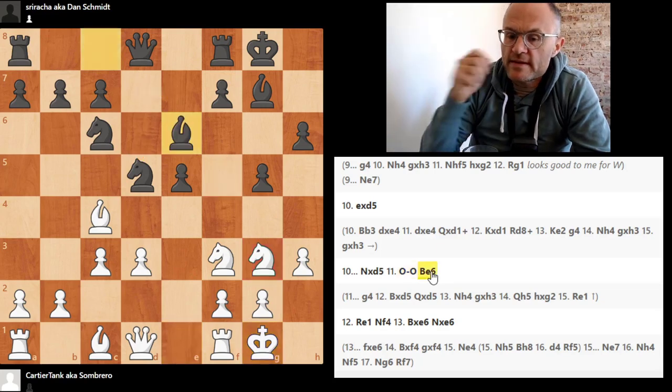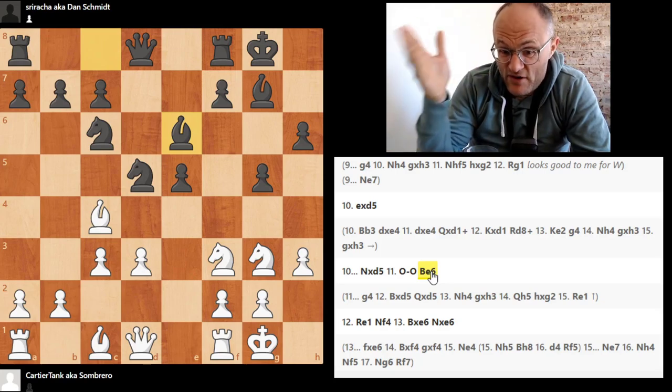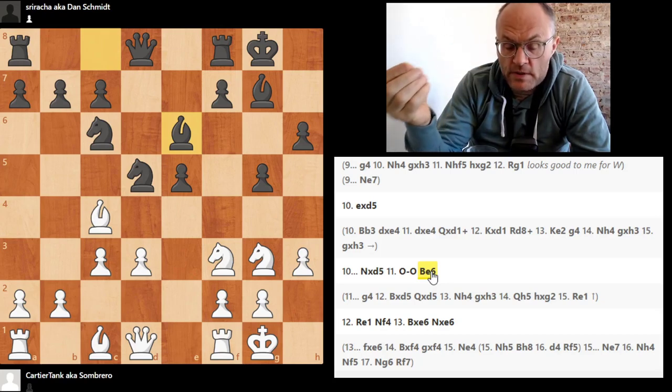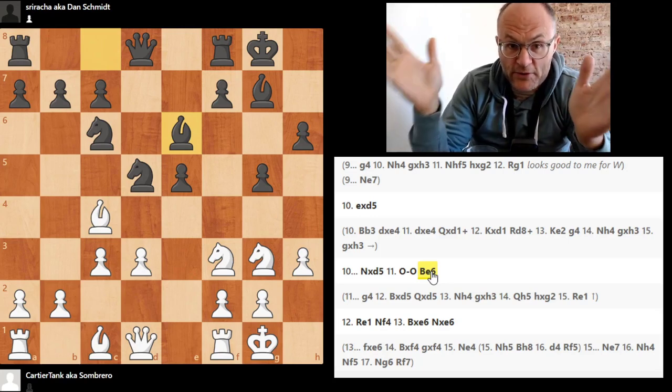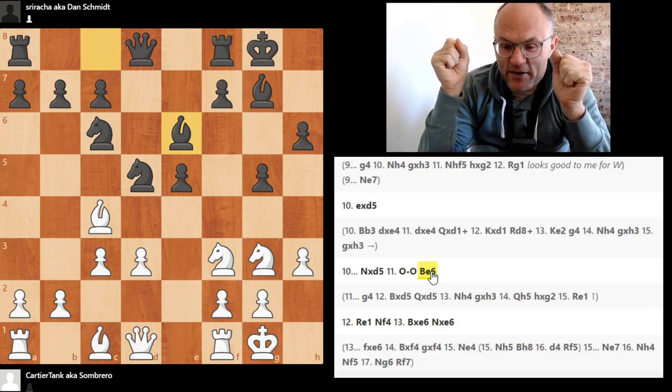Instead, we see bishop e6. And you see this in a lot of Ruy Lopez positions too. And oftentimes it's fine. But here I think bishop e6 is very problematic. And the problem is that you're setting yourself up to exchange your light square bishop. Once that thing is gone, then oh no. Then oh no. All the light squares really then are a problem.